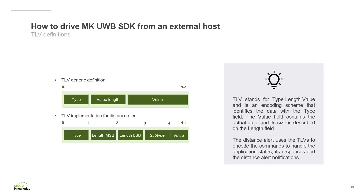The Distance Alert uses TLVs to encode the commands to handle the application states, its responses, and the Distance Alert notifications. TLV stands for Type Length Value and is an encoding scheme that describes a packet which contains a type field followed by a length field, which is then followed by a value field. The length field contains the length in bytes of the value field that comes right after it. The TLV implementation for the Distance Alert has 2 bytes for the length field, and the value field may contain a subtype field.